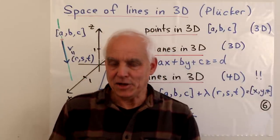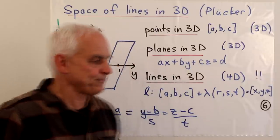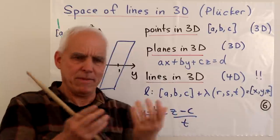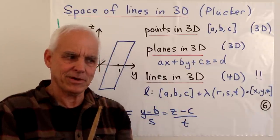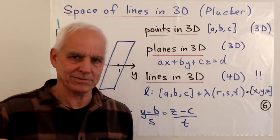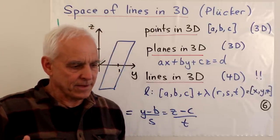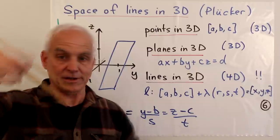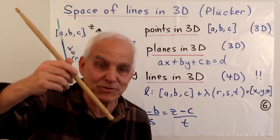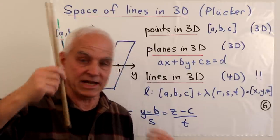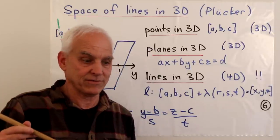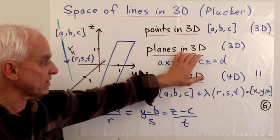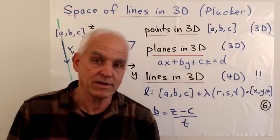A more sophisticated question is: what is the nature of this four-dimensional space? What does it actually look like? This is really a fundamental question — we're talking about lines in the world we live in, which play a crucial role. We want a good way of understanding, representing, and working with them. This is not very exotic, but just this simple question already leads us to quite sophisticated geometry necessarily involving higher dimensions.